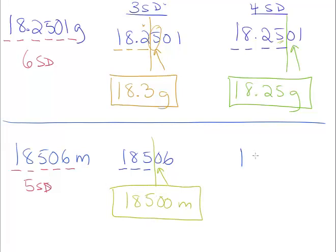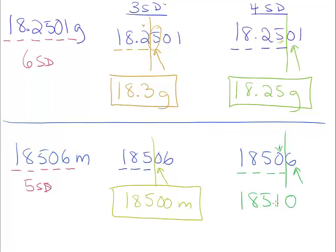For four significant digits: 18,506 — we keep 1, 2, 3, 4, and place our barrier. We focus on 6, which is greater than 5, so the fourth digit increases by one, giving us 18,510. Don't forget the trailing zero — it's not just 1851, which would be a much smaller number. So our answer is 18,510 meters, with four significant digits.